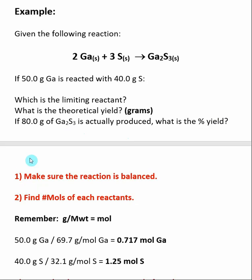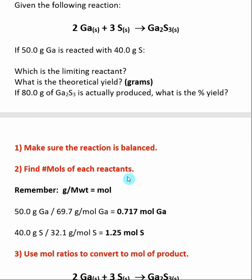Now we're going to apply the steps for determining a limiting reactant. In the first step, you make sure that your reaction is balanced. Looking at this reaction, this is a balanced reaction. Then I need to find how many moles of each reactant I have.